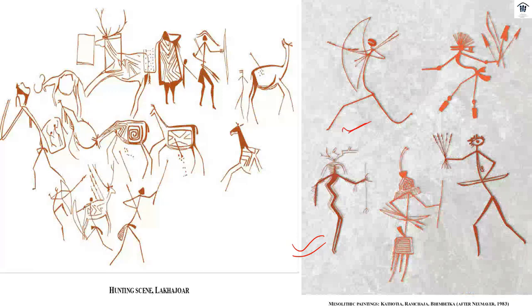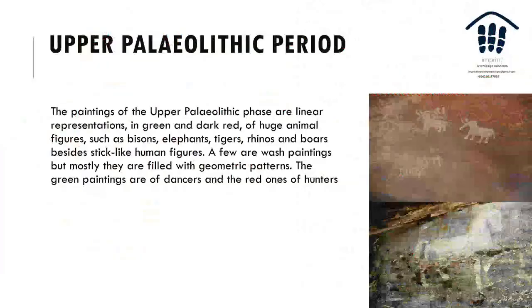The themes of Bhimbetka paintings are of great variety — from mundane events of daily life to sacred and royal images. They include hunting, dancing, music, horse and elephant riders, animal fighting, honey collection, decoration of bodies, and household scenes. This mesolithic painting shows a hunting scene — a person holding a bow and arrow, another person dancing with a spear, and a full-fledged hunting scene of a deer being hit by an arrow.